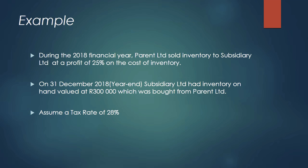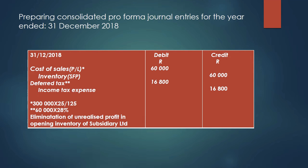In our example, during the 2018 financial year, Parent Ltd sold inventory to Subsidiary Ltd at a profit of 25 percent on the cost of inventory. On 31 December 2018, which is our year end — our year runs from 1 January to 31 December 2018 — Subsidiary Ltd had inventory on hand valued at 300,000, which was bought from Parent Ltd. For this example, we're going to assume that our tax rate is 28 percent.